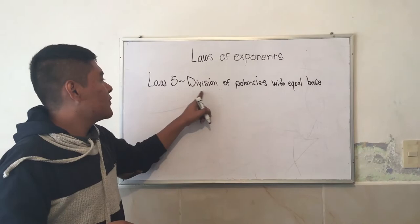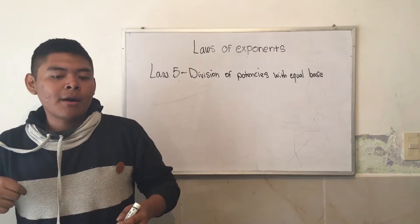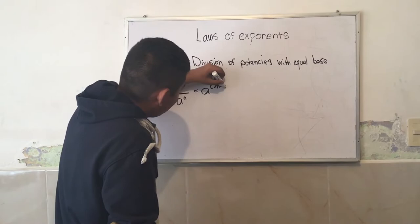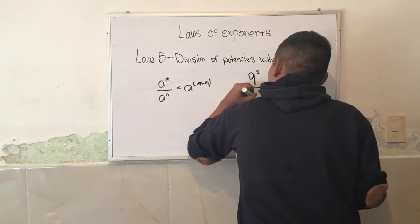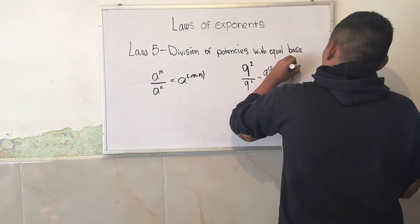Fifth law: division of potencies with equal base. To divide potencies in which the bases are equal and different from 0, the bases are maintained and the exponents are subtracted. This is A to the M over A to the N is equal to A to the M minus N. For example, we have 9 to the 2 over 9 to the 1 is equal to 9 to the 2 minus 1, which gives 9 to the 1.